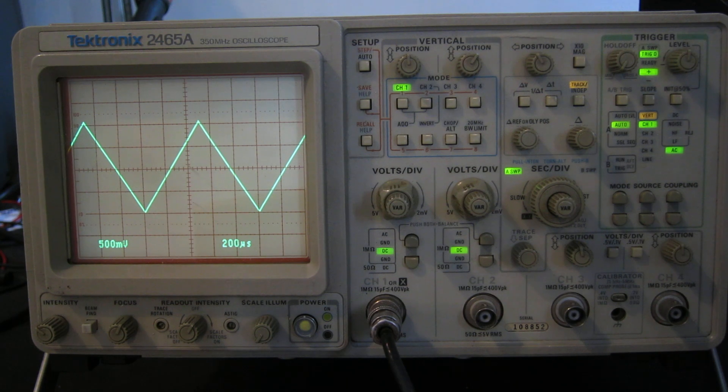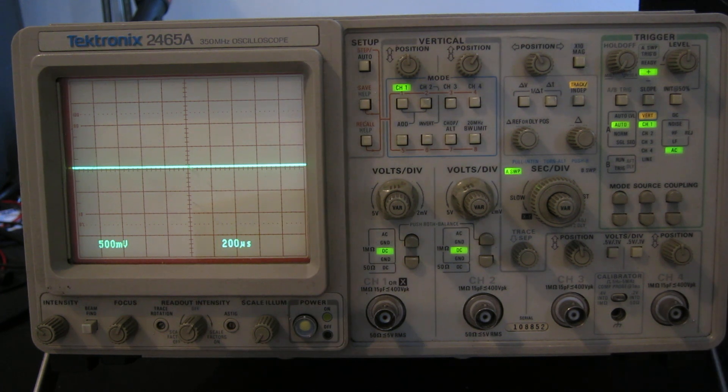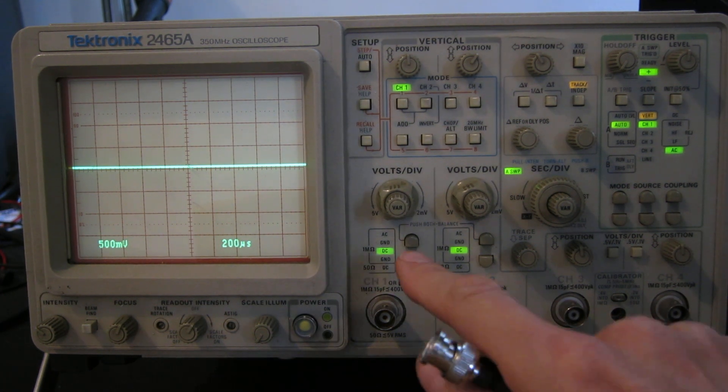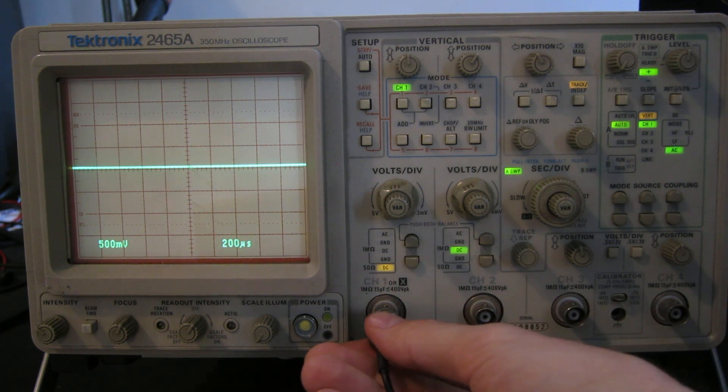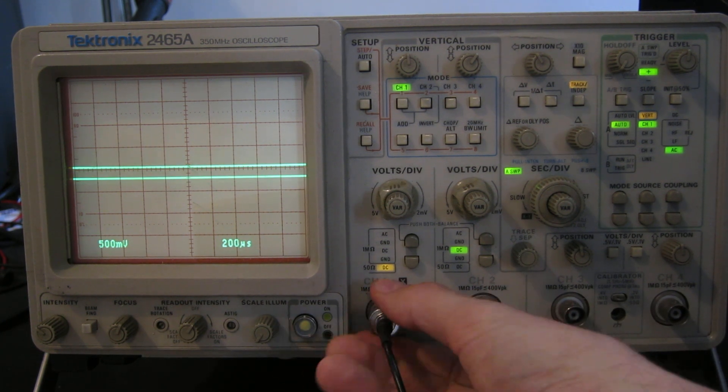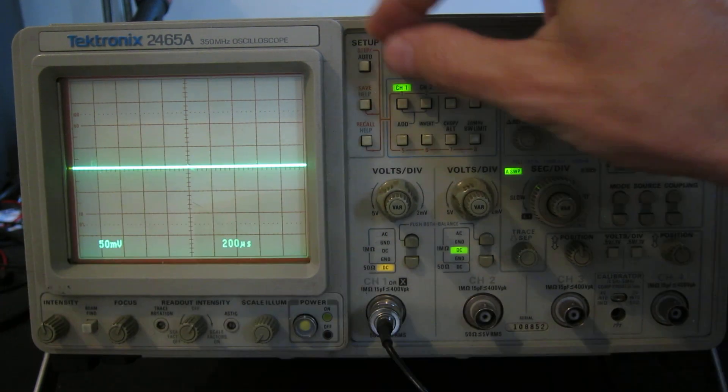We'll check the scope's bandwidth. It's rated 350 megahertz. To do that, we need a fast rise time pulse, which I have on this signal generator here. We need to put the input onto a 50 ohms terminated mode to get maximum bandwidth and accuracy. Turn up the sensitivity. Intensity a bit.